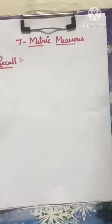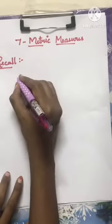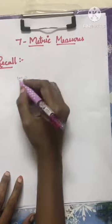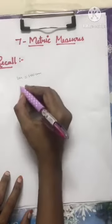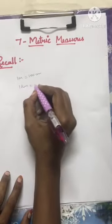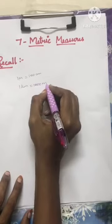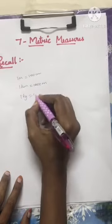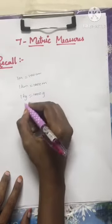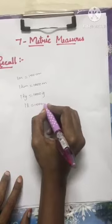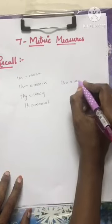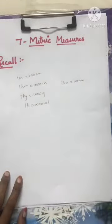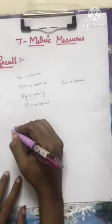In metric measures chapter number 7, let's do the recollection. We already know: 1 meter is equal to 100 centimeter, 1 kilometer is equal to 1000 meter, 1 kilogram is equal to 1000 gram, 1 liter is equal to 1000 milliliter, 1 centimeter is equal to 10 millimeter.